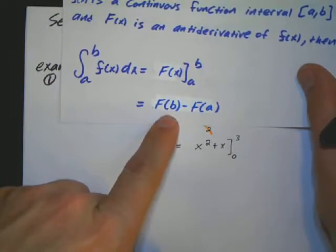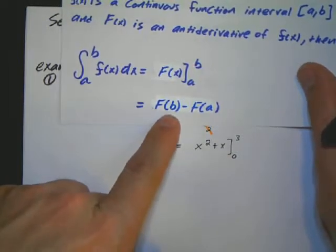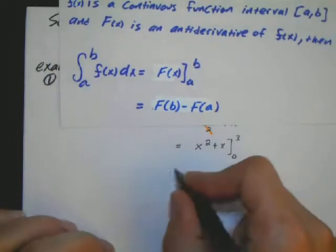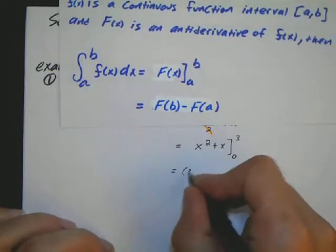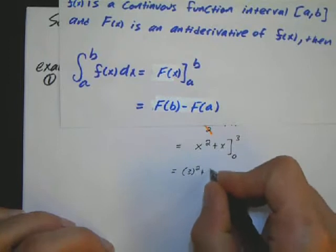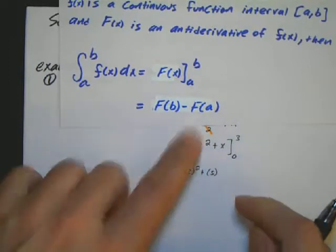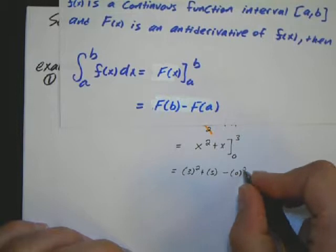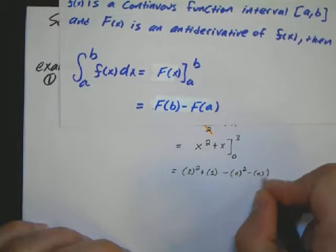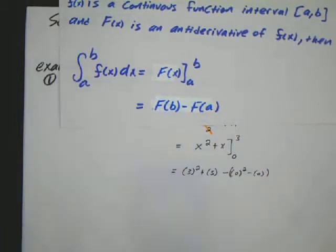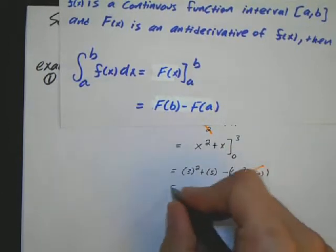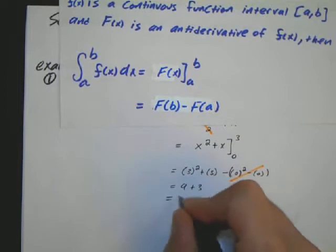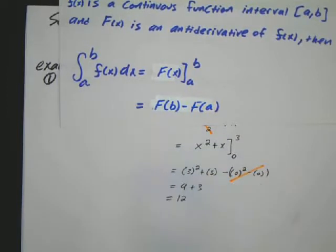Then the fundamental theorem says just plug in the top limit into your antiderivative. So it's going to be 3 squared plus 3. And then subtract away your lower limit. In this case, my lower limit is going to be 0 squared minus 0. So it's not really going to affect my answer. All this is going to be nothing.